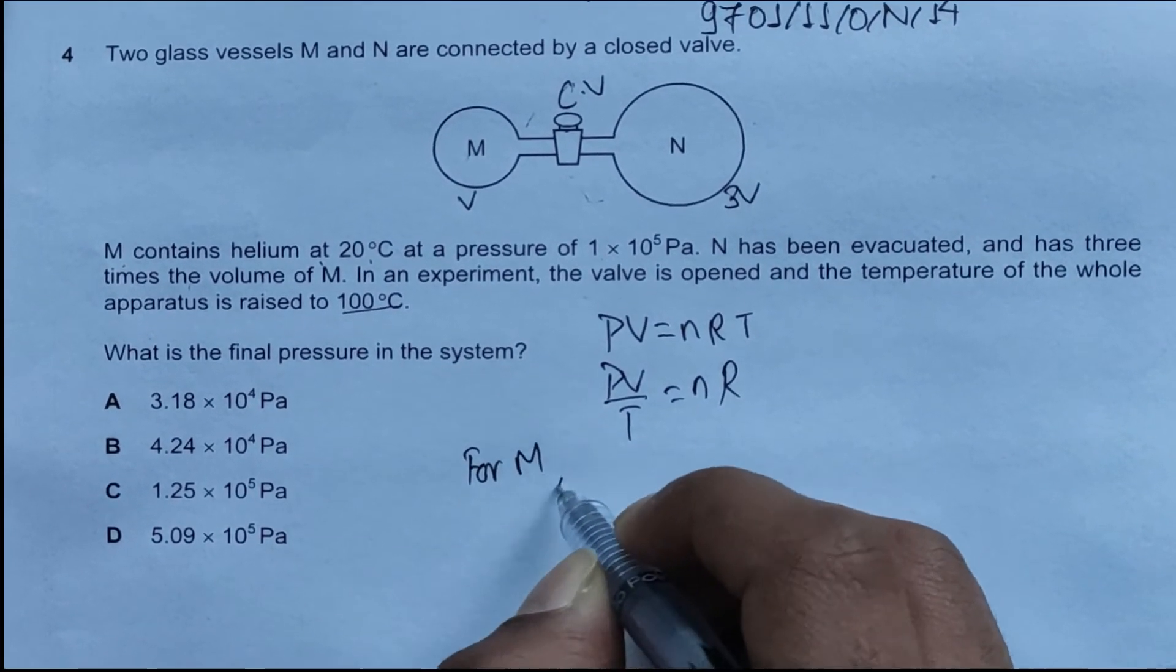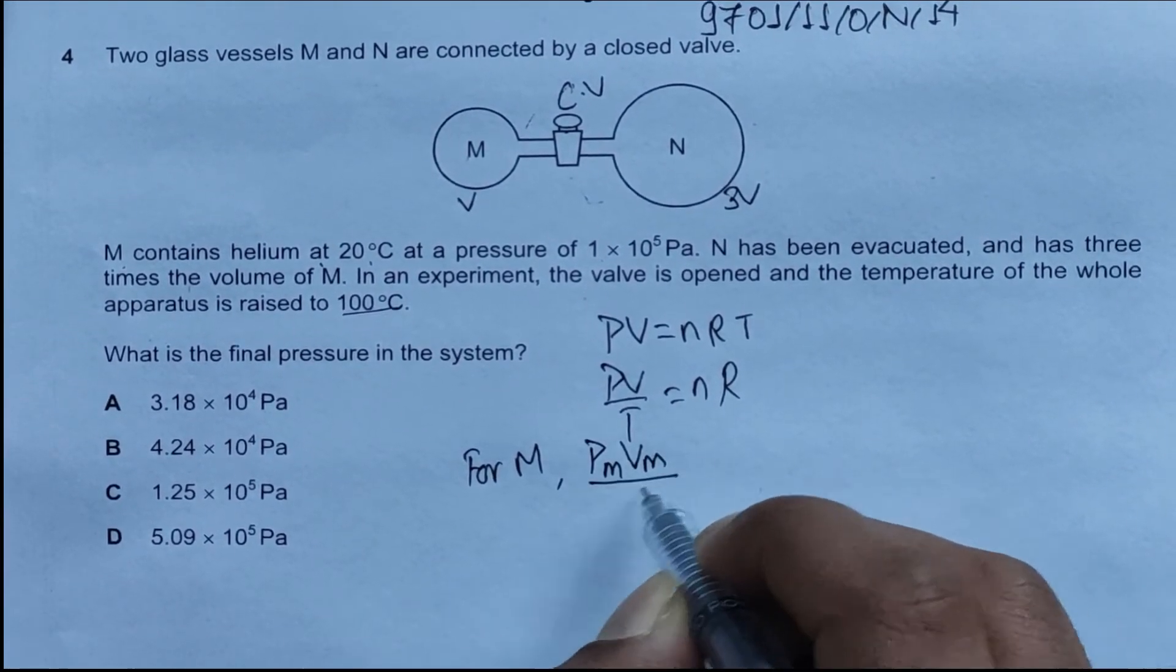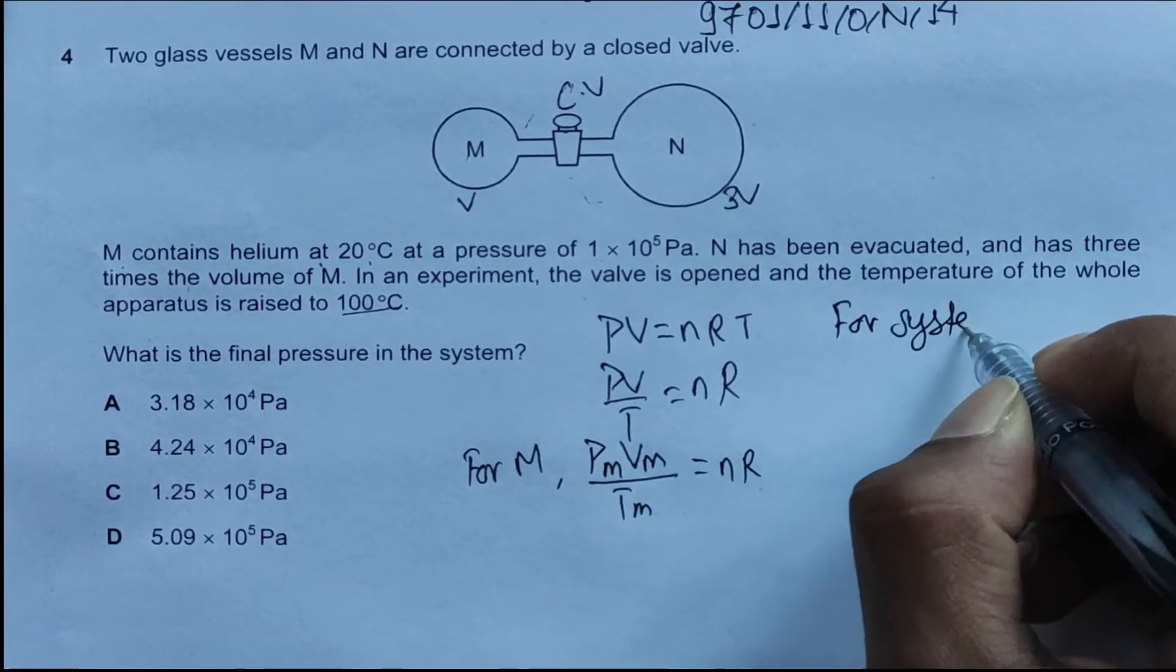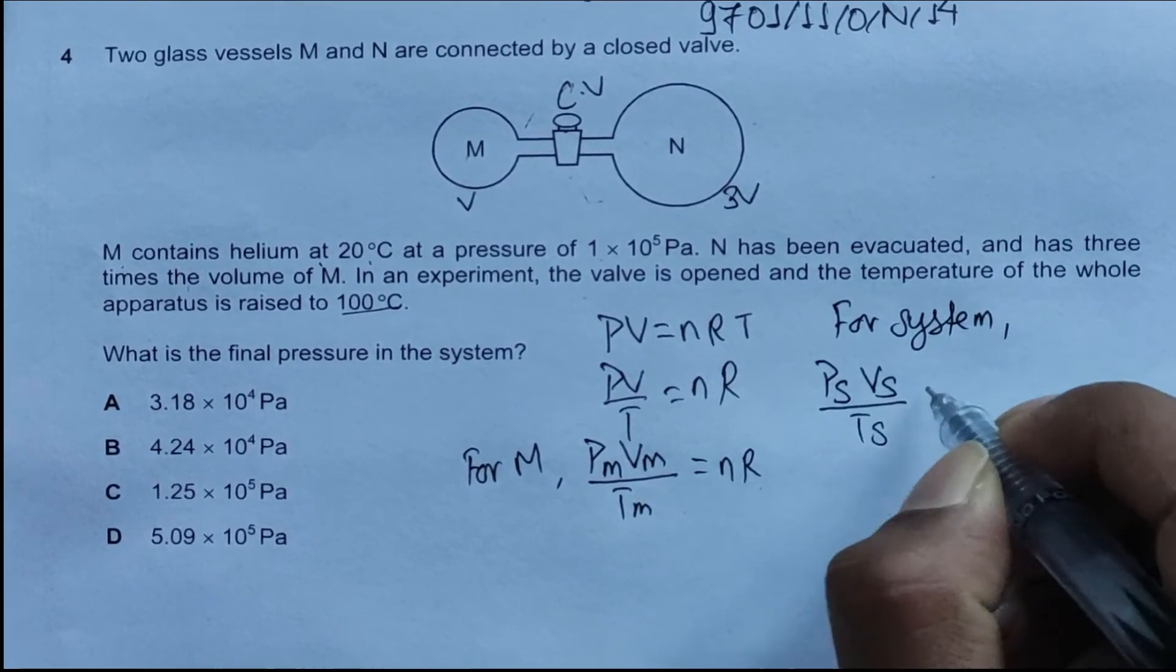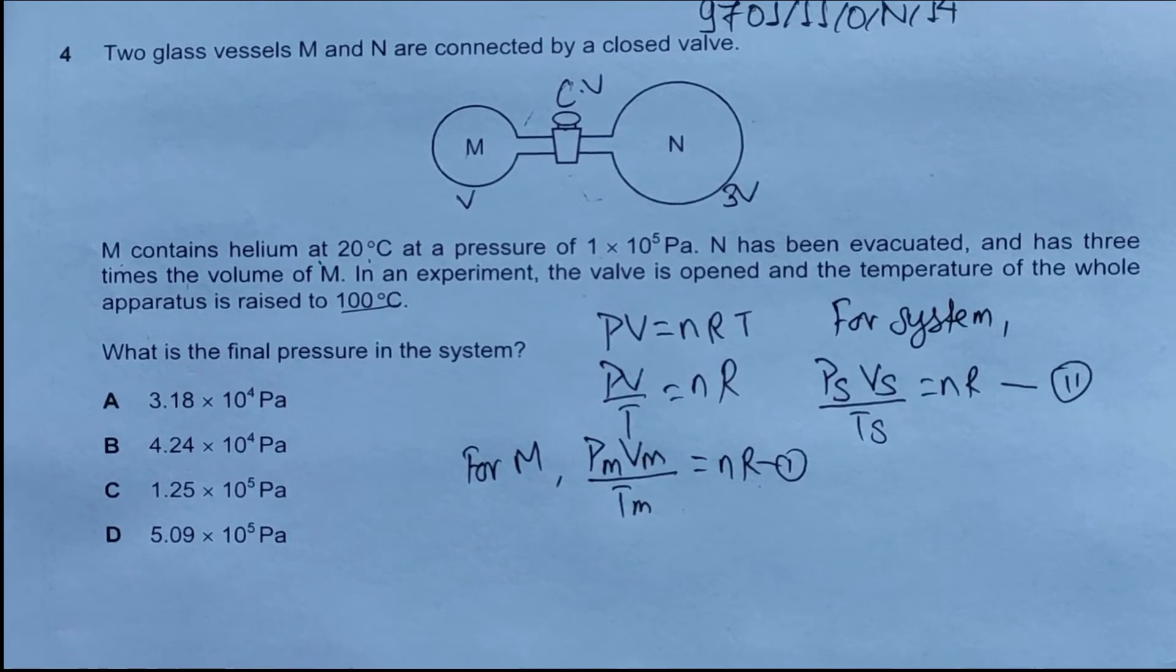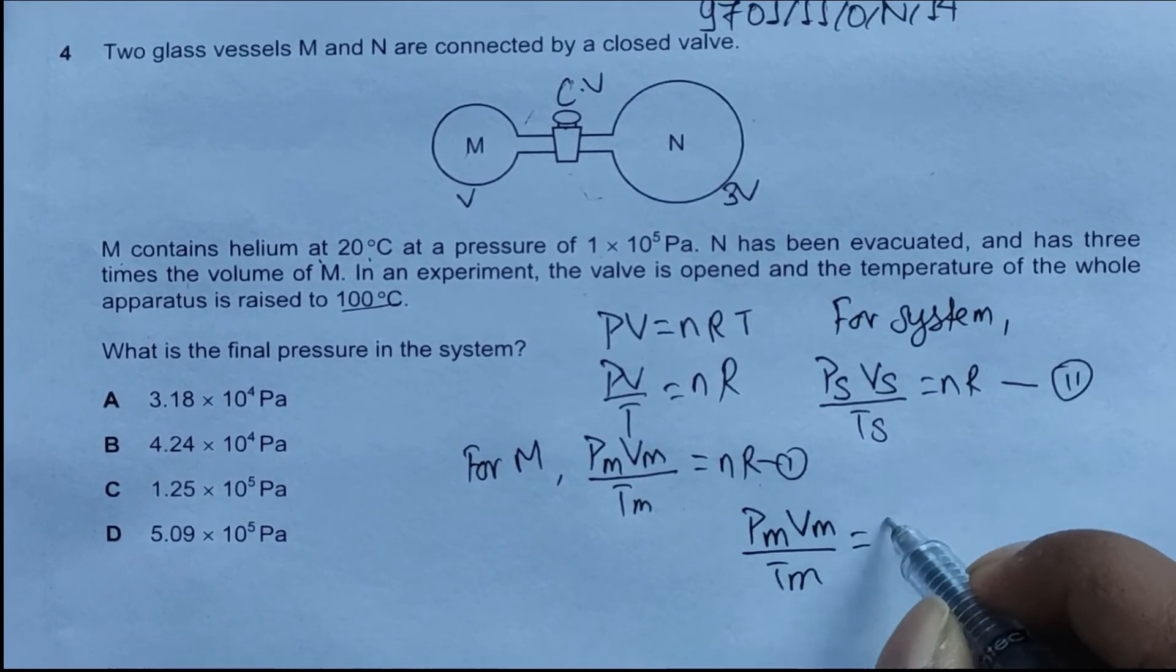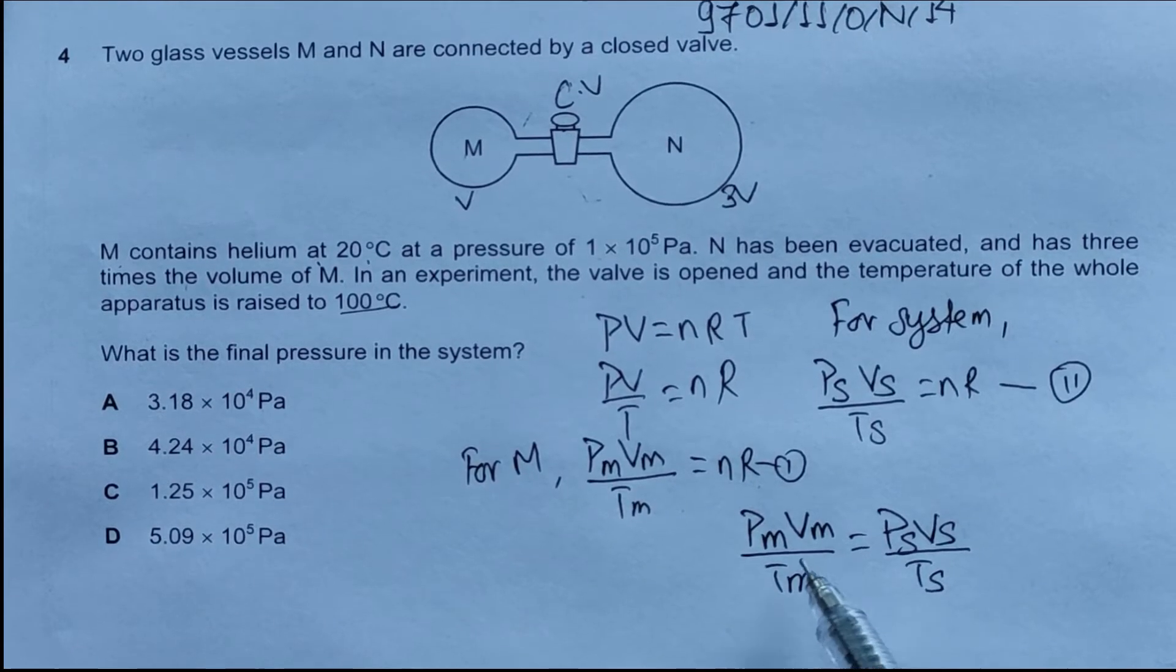For M, our equation is P_M V_M / T_M equals nR. For the system, it's P_S V_S / T_S equals nR. We'll label this equation 1 and equation 2. Since nR is common to both equations, we can equate these and say P_M V_M / T_M equals P_S V_S / T_S.